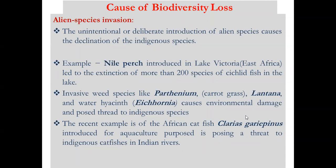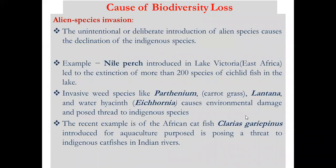The third cause is alien species invasion. The unintentional or deliberate introduction of alien species causes decline of indigenous species. When an exotic species is introduced into a local area, it can dominate and destroy local species. For example, the Nile Perch, introduced into Lake Victoria in East Africa, led to the extinction of more than 200 species of cichlid fish in the lake.